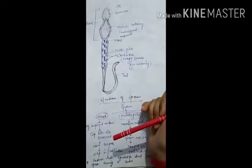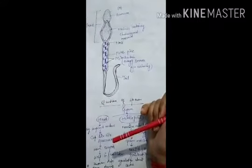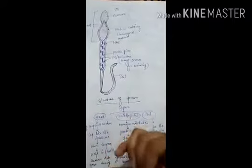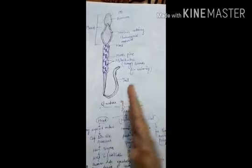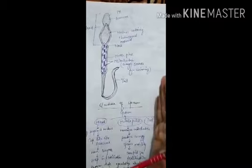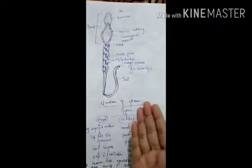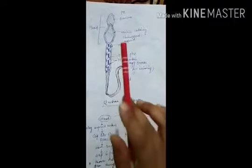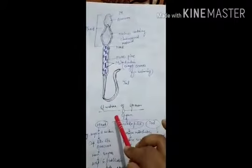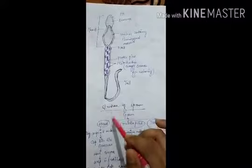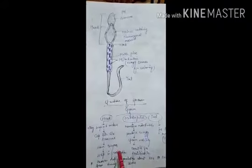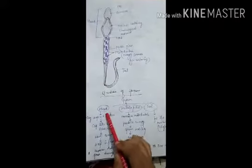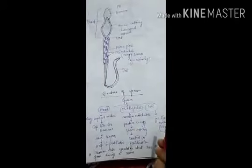This last portion is the tail. So this is the structure of a sperm, also called spermatozoa. From spermatids, spermatozoa are formed. Spermatozoa is also called sperm — it is a longer structure. Spermatozoa has three regions: head, middle portion, and tail.